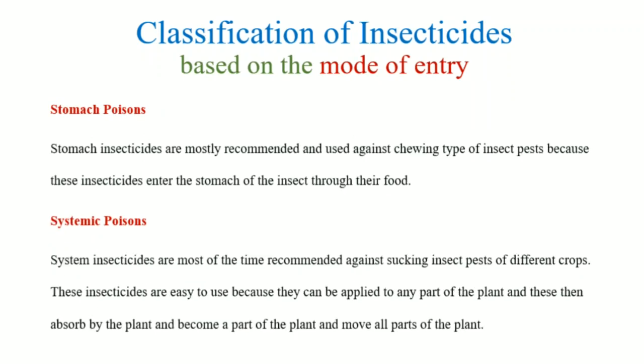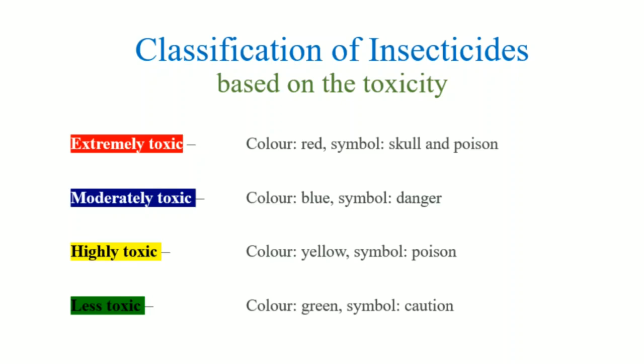Stomach poisons are mainly used against chewing type insects, because they enter the insect's body along with their food. Systemic poisons are used against sucking type insect pests. We apply the insecticide on any part of the plant, it becomes part of the plant's fluids, and when the insect sucks the fluids, the insecticide enters into their body.